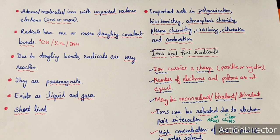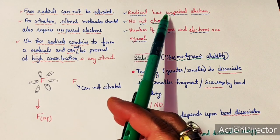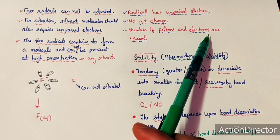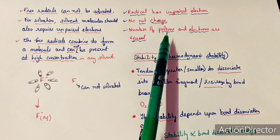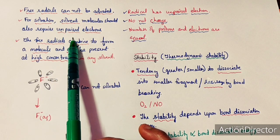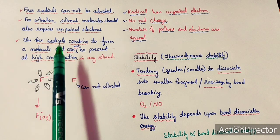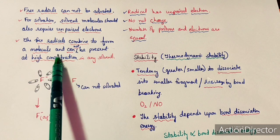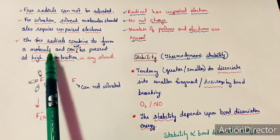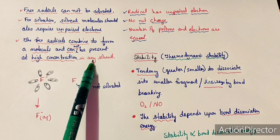Free radicals, by contrast, cannot be solvated. Radicals have unpaired electrons but no net charge, meaning the number of protons and electrons are equal — entirely different from ions. For solvation to occur, solvent molecules would also require unpaired electrons. Free radicals combine with each other to form molecules, so we cannot find free radicals at high concentration in any solvent. For example, fluorine atoms (9 protons, 9 electrons) immediately react with each other to form F₂, unlike fluoride ions which can be hydrated in water.